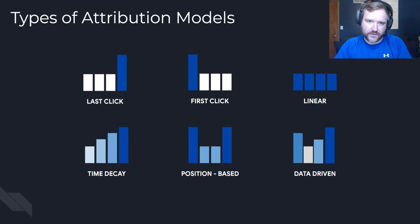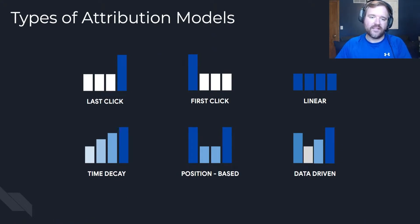In Google Ads specifically, there are five or six typical attribution models: last click, first click, linear, time decay, position-based, and data-driven.